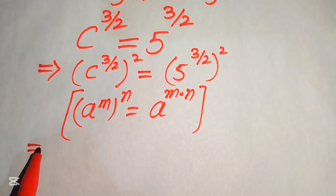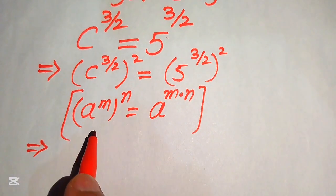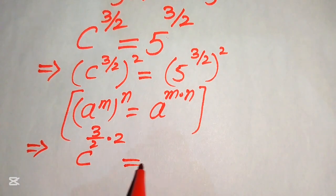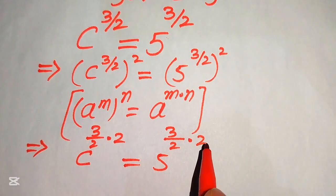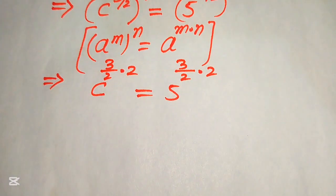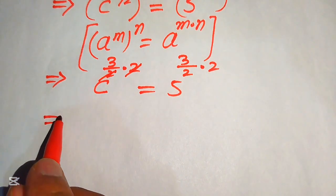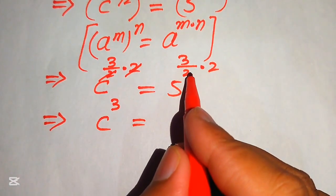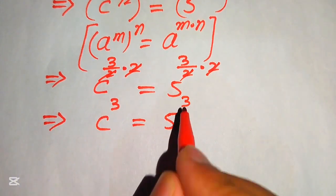According to this exponent law, we multiply these two exponents and it will be written as c to the power of 3 over 2 multiplied by 2, equals to 5 to the power of 3 over 2 multiplied by 2. Now here the 2 and 2 cancel, and we get c cubed equals to 5 cubed.